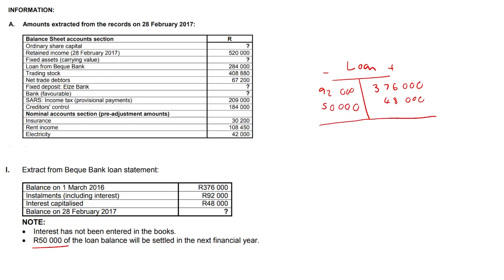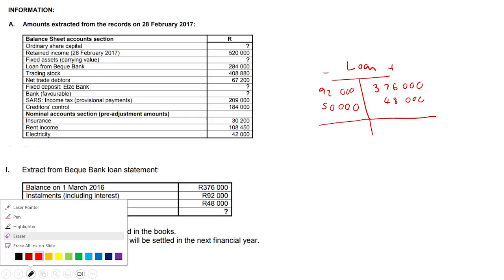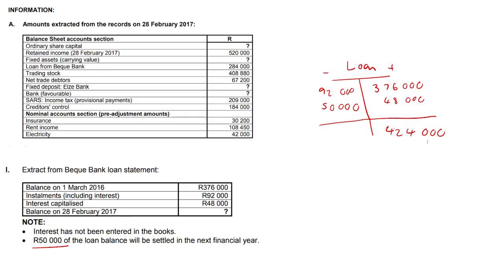Let's just total everything up — we total the bigger side. So 376,000 plus 48,000. I initially read that as 3,812,000 — please forgive me, I had a complete moment there. Sorry, I did something very silly on my calculator — happens to the best of us. It's actually 424,000 on this side.